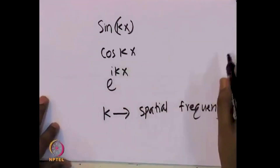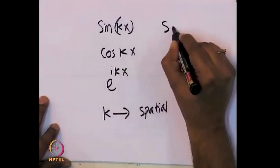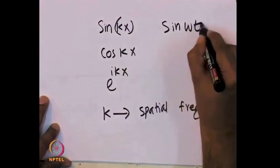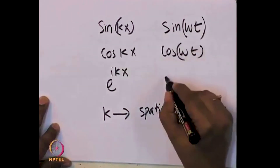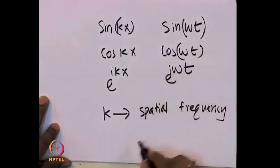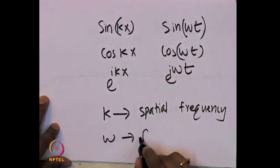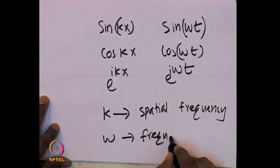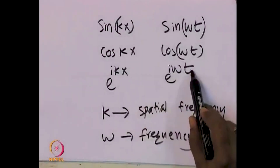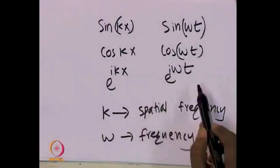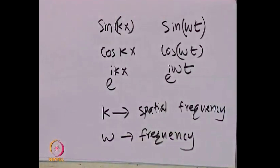You can do exactly the same thing with time. You can say sine omega t, cosine omega t, or e^(i omega t), where omega is also a frequency — it is temporal frequency. So whatever we said so far applies either for k or omega. There is either space or time and there is a corresponding frequency. Now, how is this related to Fourier transform?